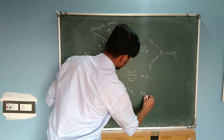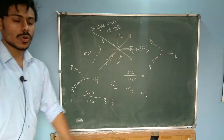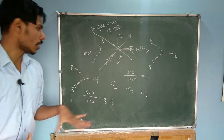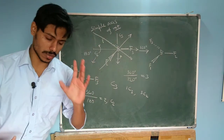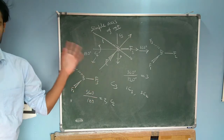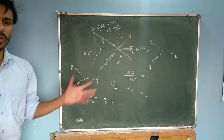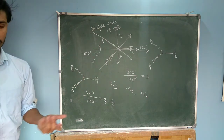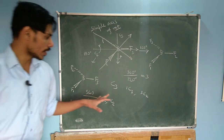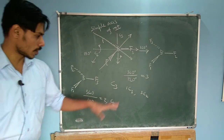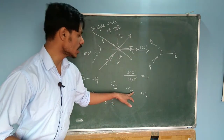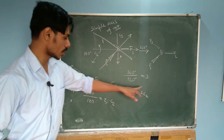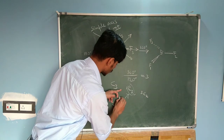Any molecule that has a simple axis of rotation can have more than one. When there are multiple axes — for example Cn and Cm — if n is greater than m, then Cn is called the principal axis of rotation. So for BF3, C3 is the principal axis of rotation.